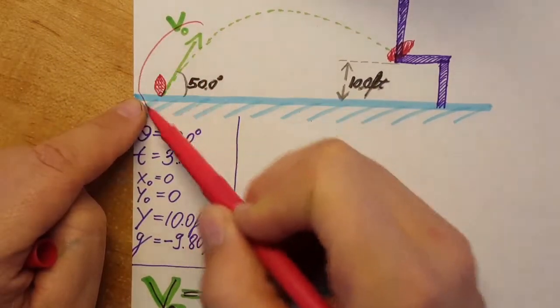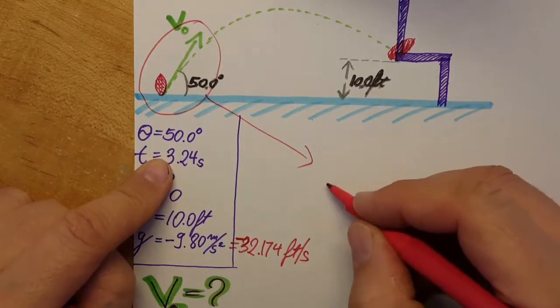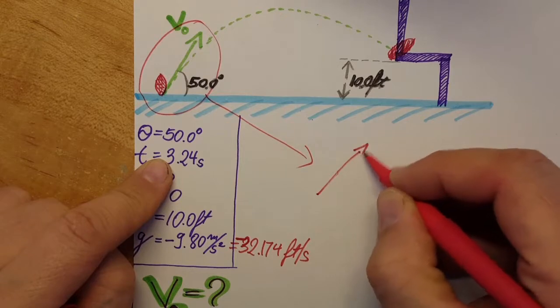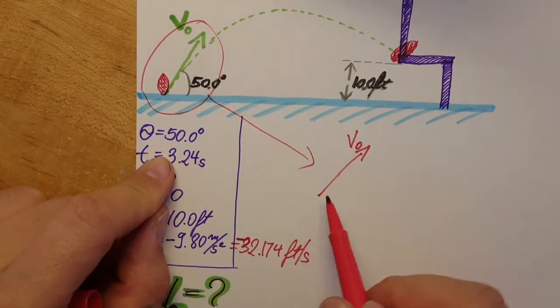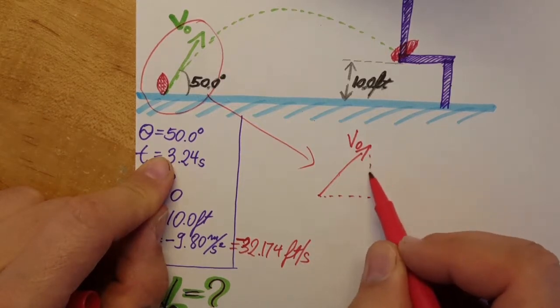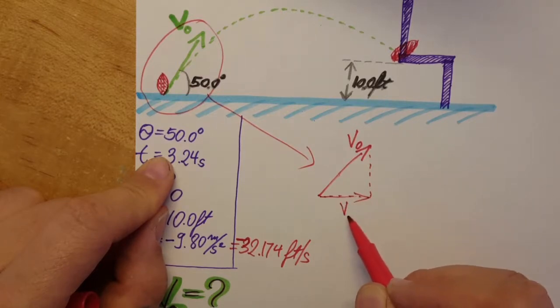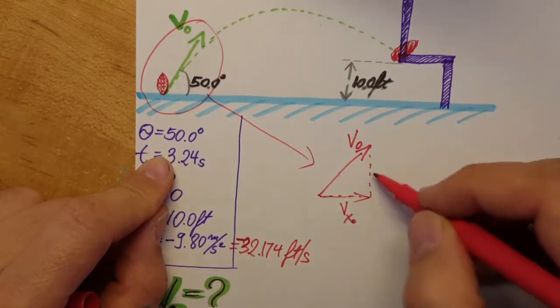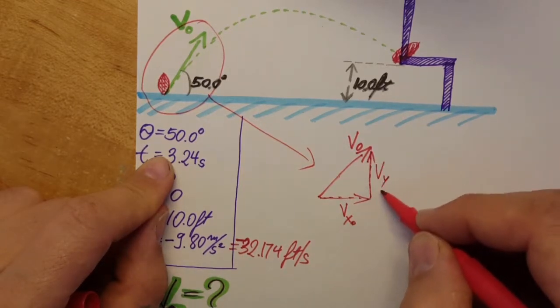Okay, I'm gonna blow up this area just so we can see it better. So here we can see it better. This is V0 and this vector has components. And this one will be our Vx0 and this one will be our Vy0.